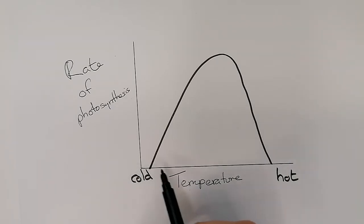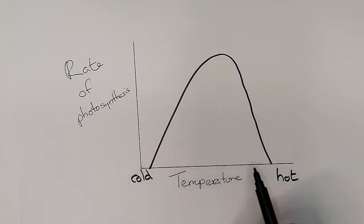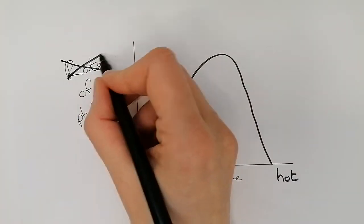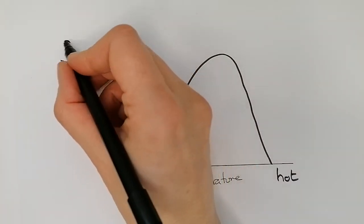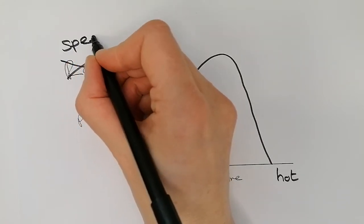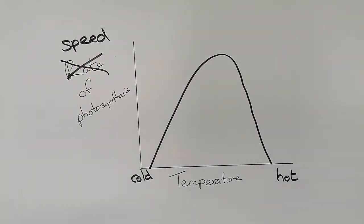The left end of the x-axis is really cold, getting warmer toward the right. On the far left-hand side, the y-axis shows rate of photosynthesis, which really means the speed of photosynthesis — how fast the reaction is going.